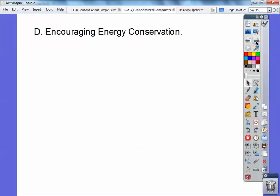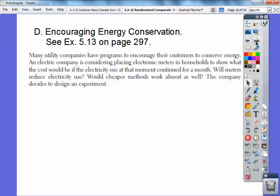Section D, encouraging energy conservation. And this is example 5.13 on page 297. So many utility companies have programs to encourage their customers to conserve energy. An electric company is considering placing electronic meters in households to show the cost, to show what the cost would be if electricity used at that moment continued for a month. Will meters reduce electricity use? Would cheaper methods work almost as well? So the company decides to design an experiment.